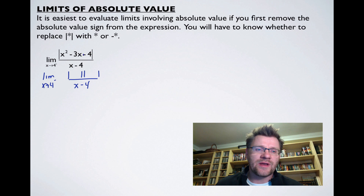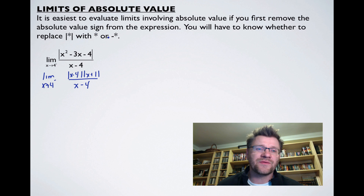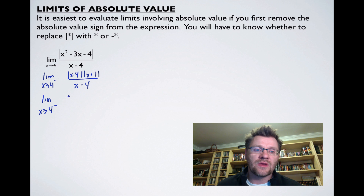The two numbers that multiply to negative 4 and add to negative 3 are negative 4 and positive 1. Now with the absolute value of x minus 4, we need to decide whether to replace it with positive x minus 4 or negative x minus 4. Because we're approaching from the negative side of 4, we replace it with negative x minus 4.